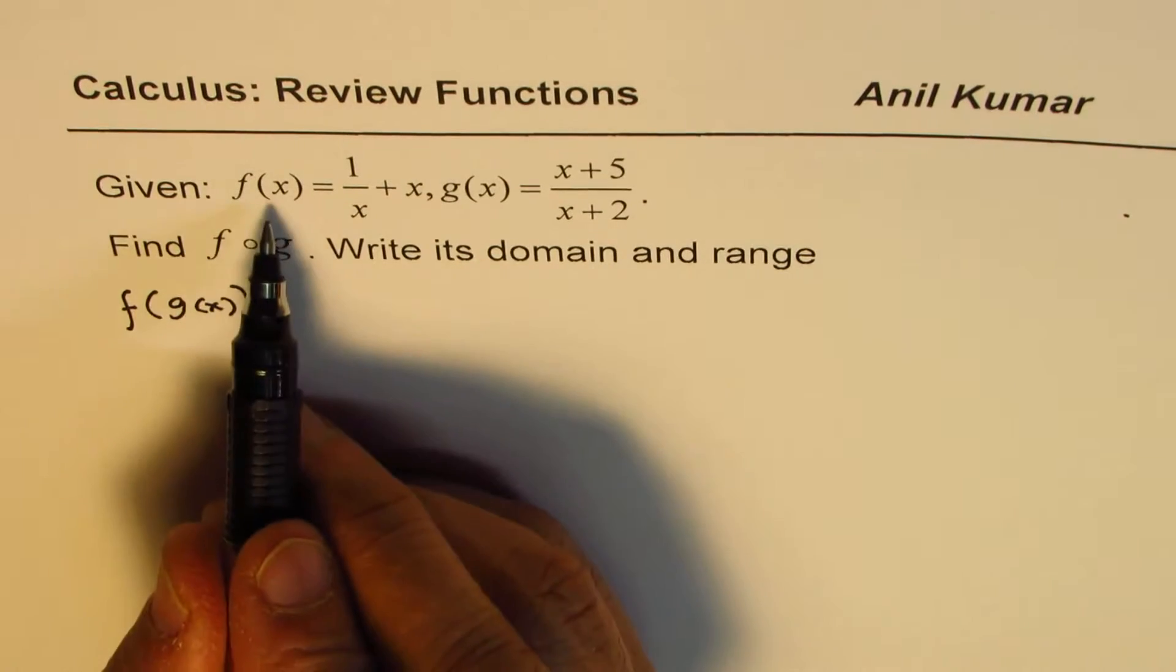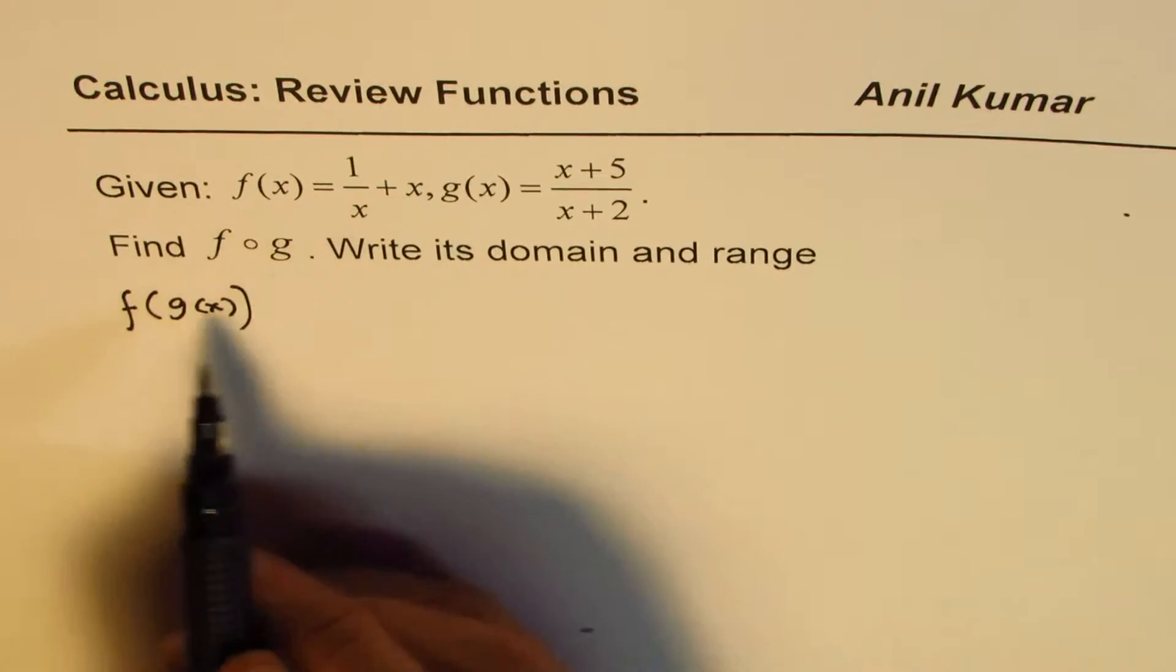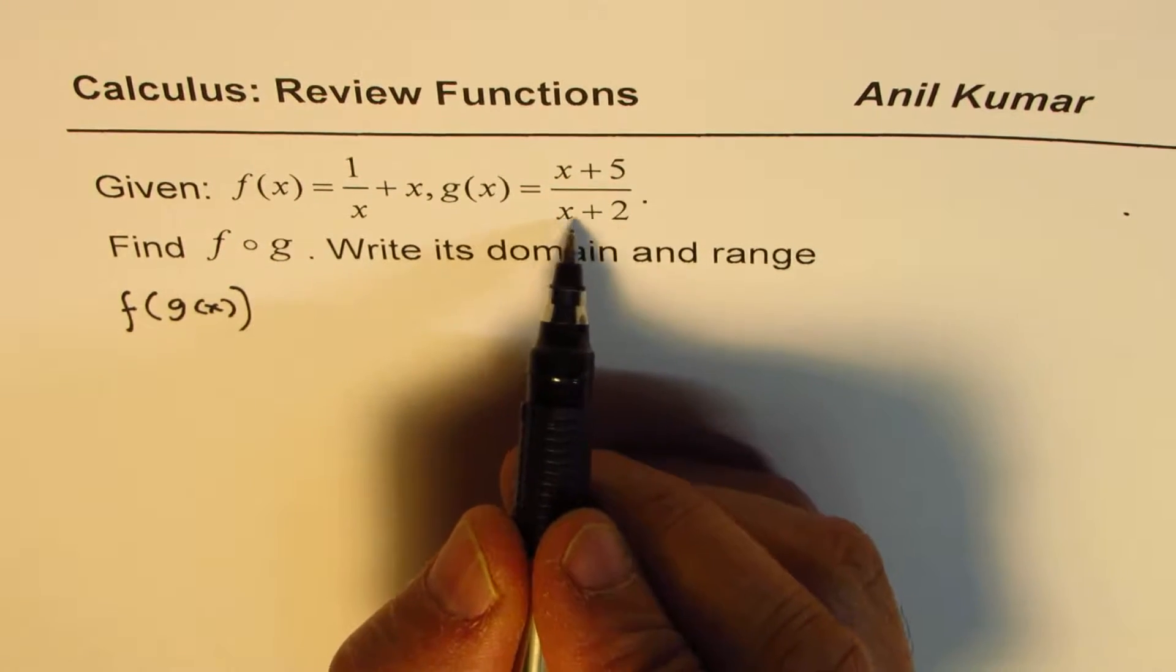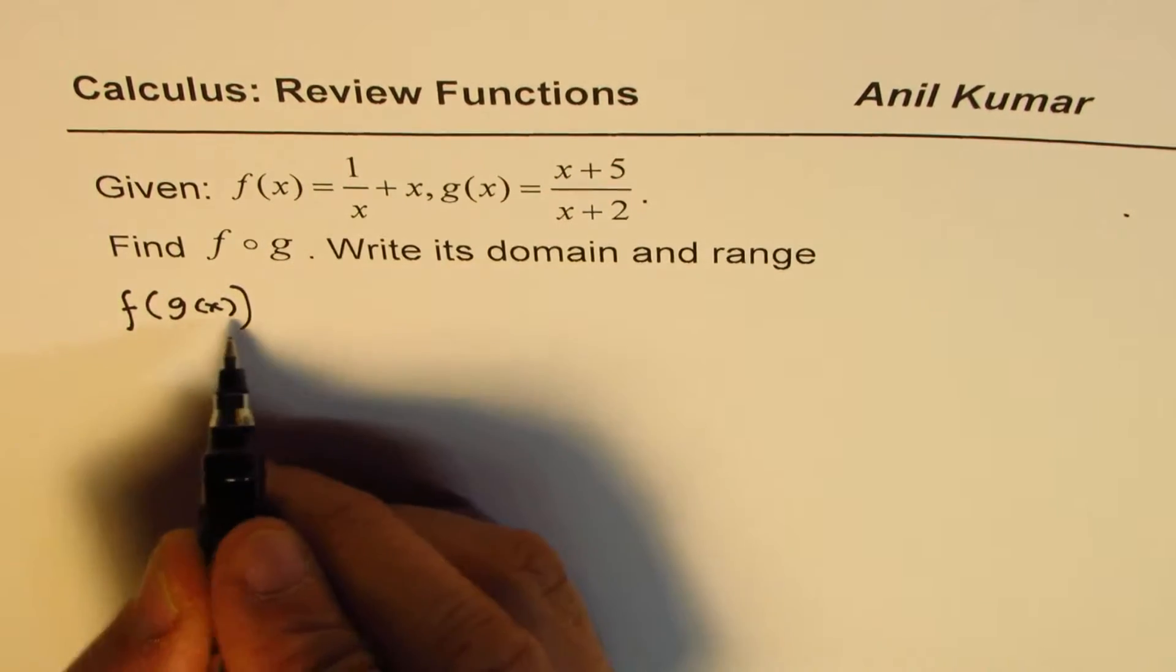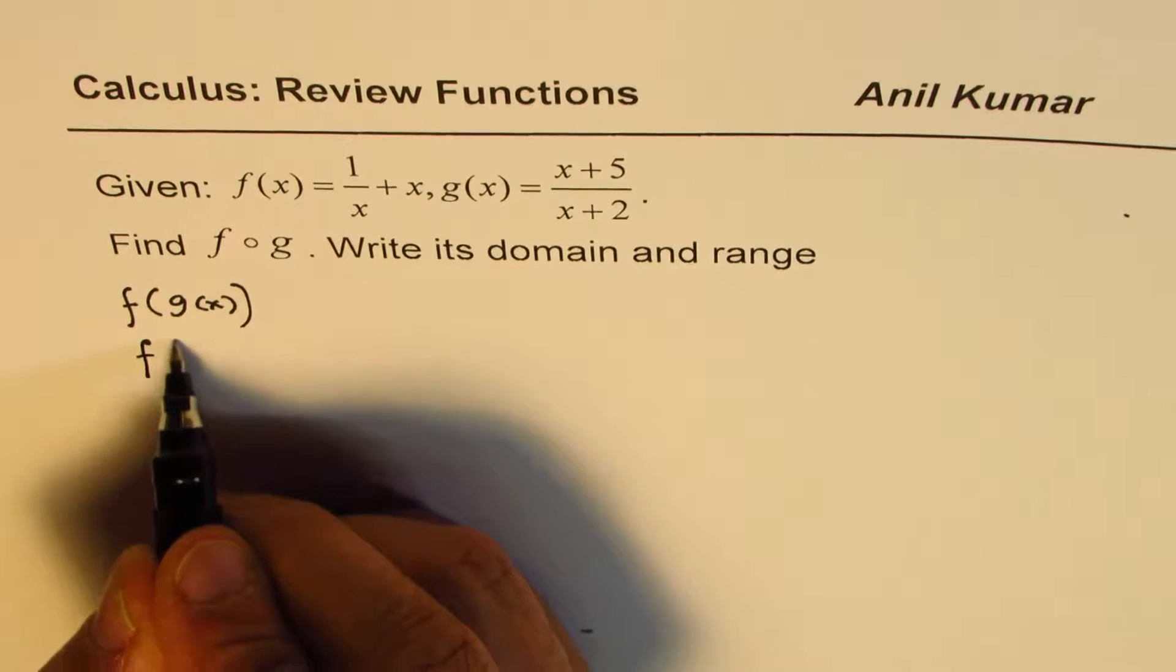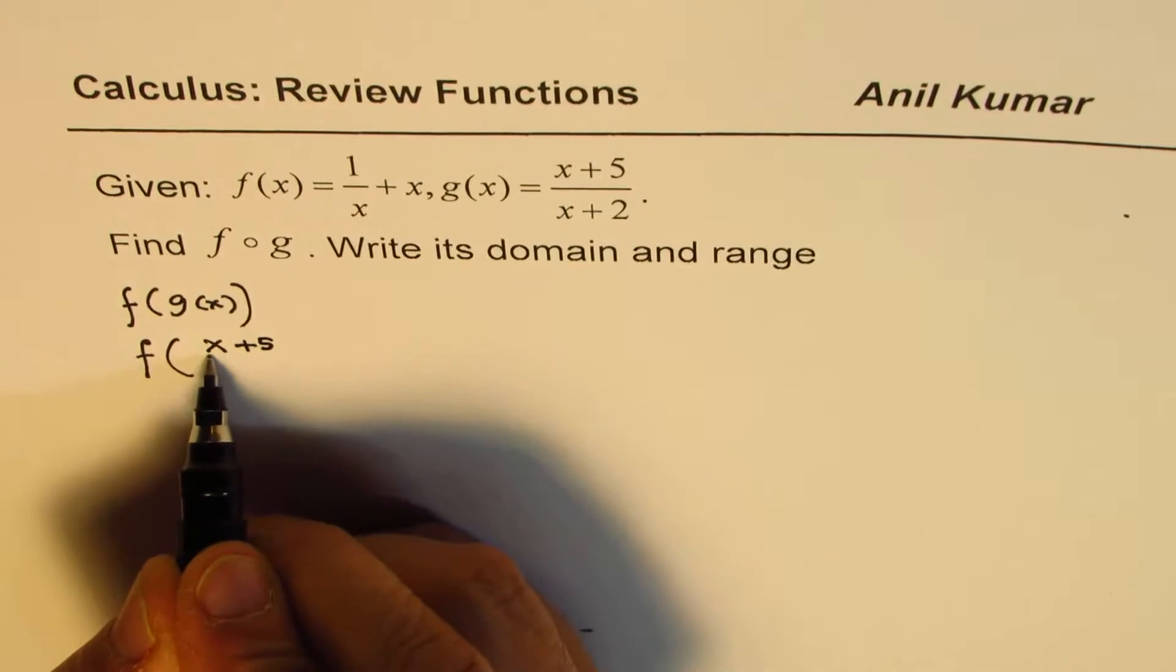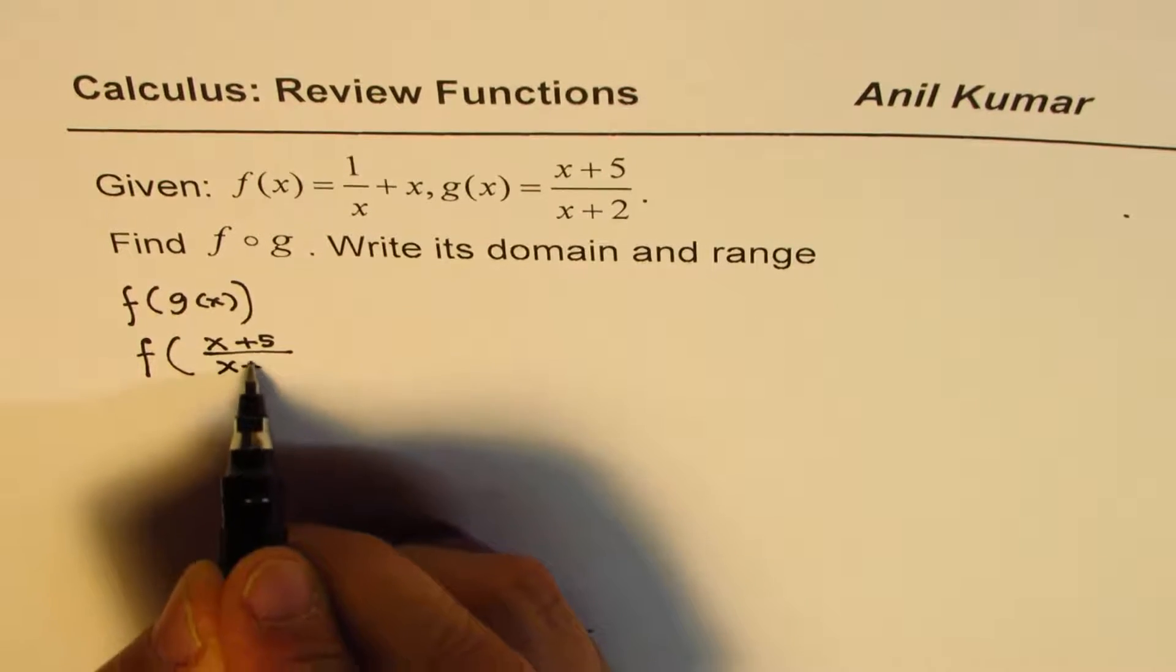Now, we have f of x as 1 over x plus x and g of x is x plus 5 divided by x plus 2. So we can replace this here. We can get f of g of x is the rational function x plus 5 divided by x plus 2.